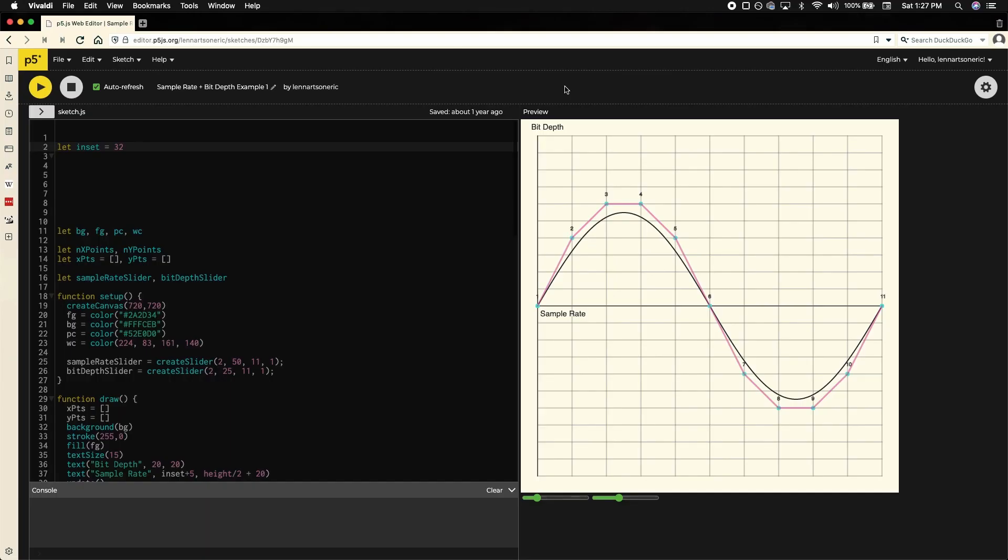While sample rate is how much we divide up time, bit depth is how many different volumes or amplitudes your computer can record for each sample. A bit depth of 16 or 24 is pretty standard.